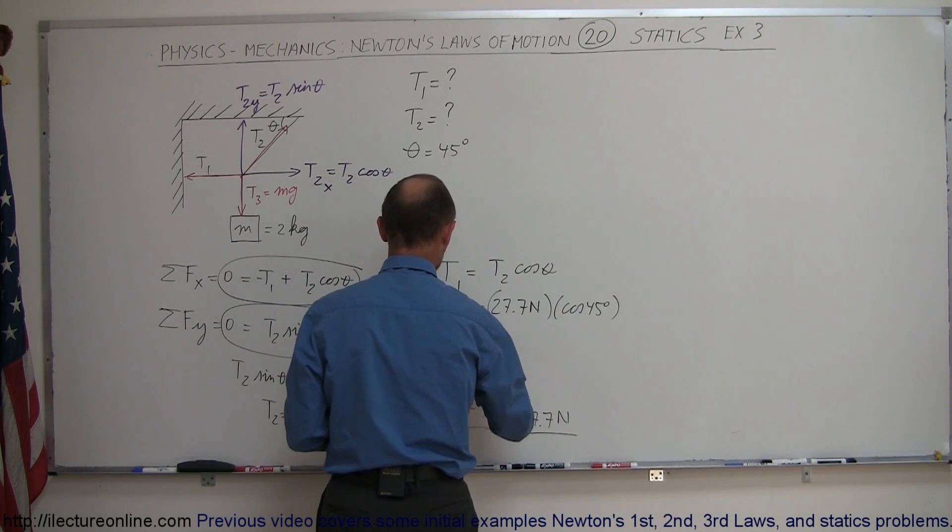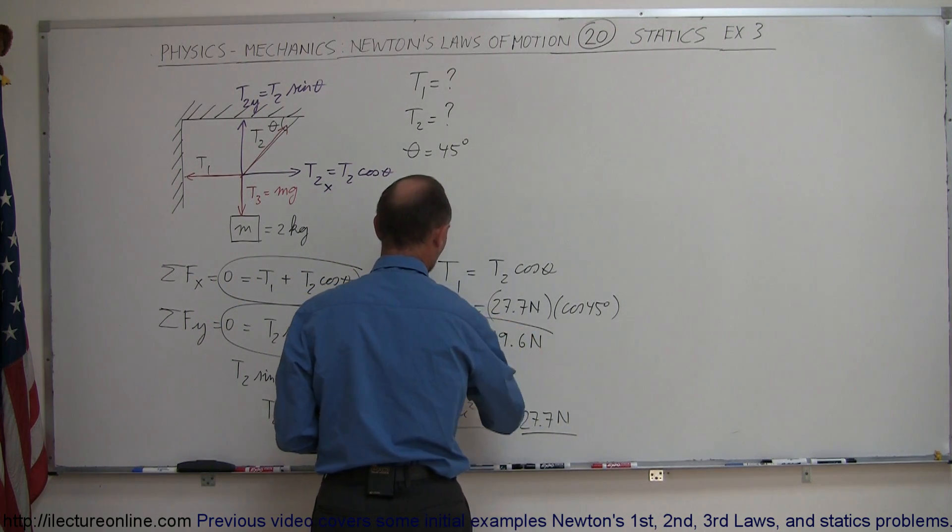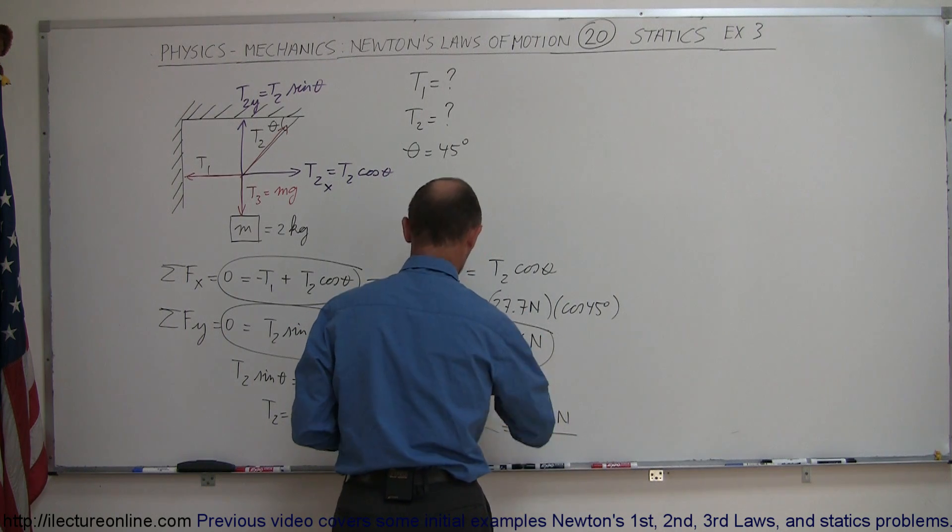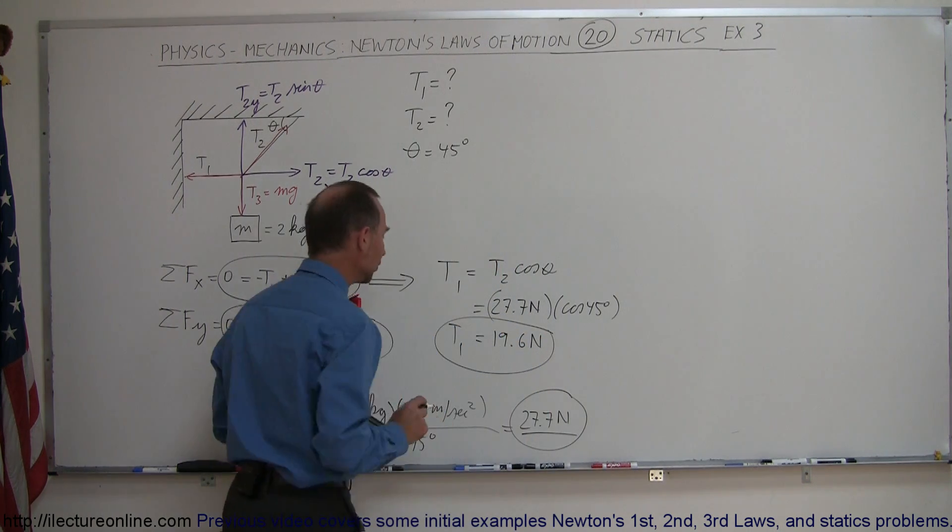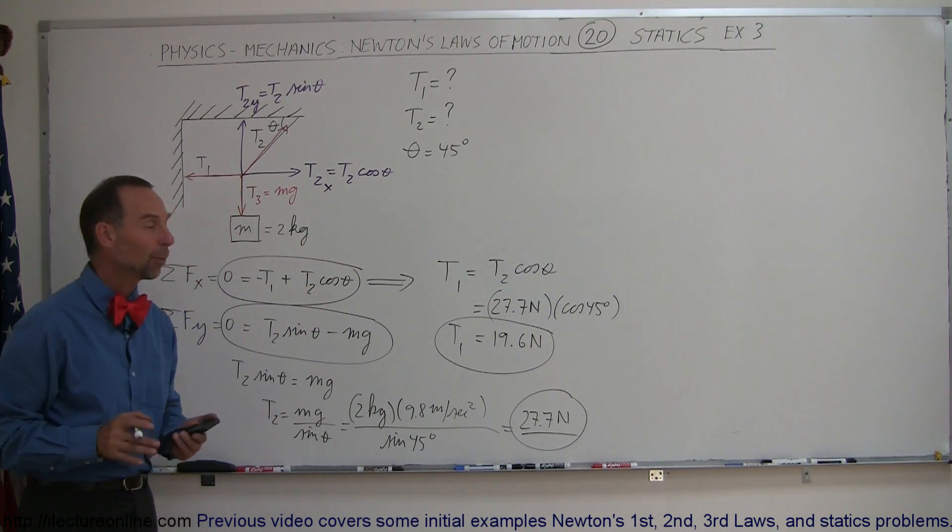and so we have T1 equal to 19.6 newtons. All right, so now we have T2, which is 27.7 newtons, and T1, which is 19.6 newtons.